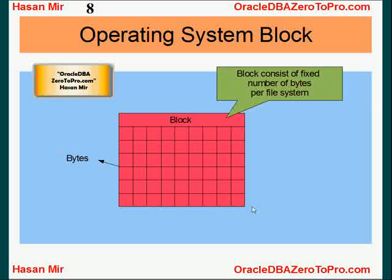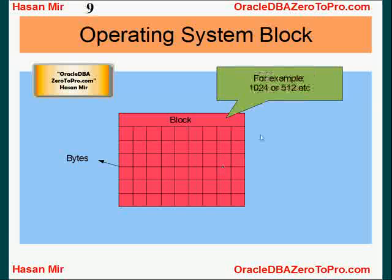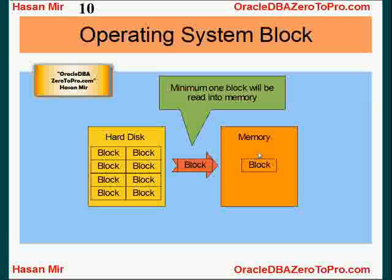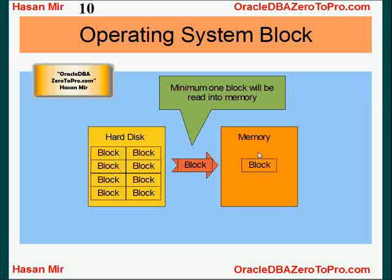You could have multiple choices and change the default value, but the bottom line is that at the OS level, a block on the hard disk consists of a fixed number of bytes — for example, 1024 bytes or 512 bytes. The significance of a block is that when some program running in memory needs information from the hard disk, the whole block must go from hard disk into memory. Even if you need only minor information, a minimum of one block will be read. So a block is the smallest unit that will be loaded into memory.